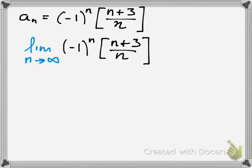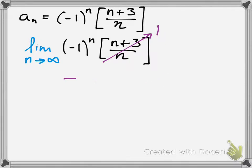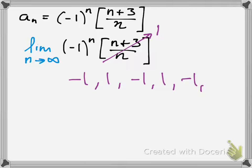From the previous example, we know the inner part goes to 1. However, now that we have the (-1)^n term attached to it, what does that do to the limit? Well, if we keep having a negative number, a positive number, a negative number, a positive number — it's actually going to alternate between negative 1 and 1, negative 1 and 1. It's just going to keep going up and down between 1 and negative 1. It's never going to converge to one point. Therefore, it's going to diverge.